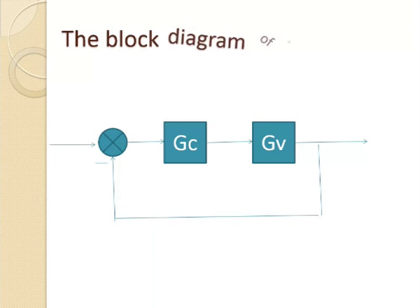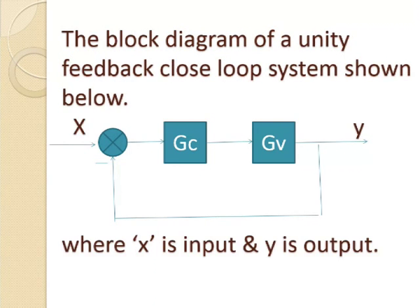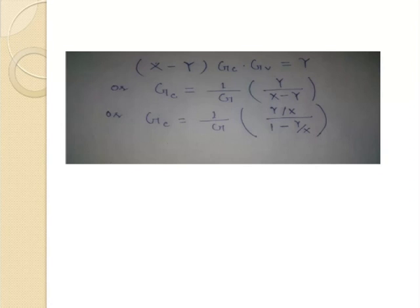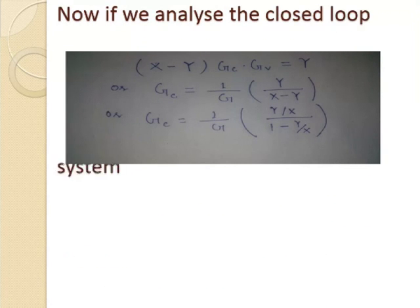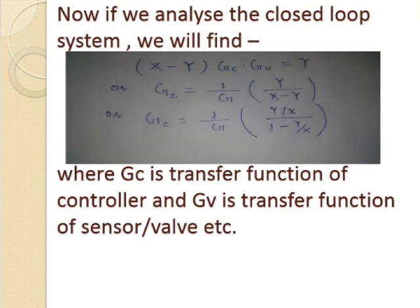Now the block diagram of the unity feedback closed-loop system shown below, where X is the input and Y is the output. Now if we analyze the closed-loop system, we will find when Gc is the transfer function of the control and Gv is the transfer function of the sensor value.